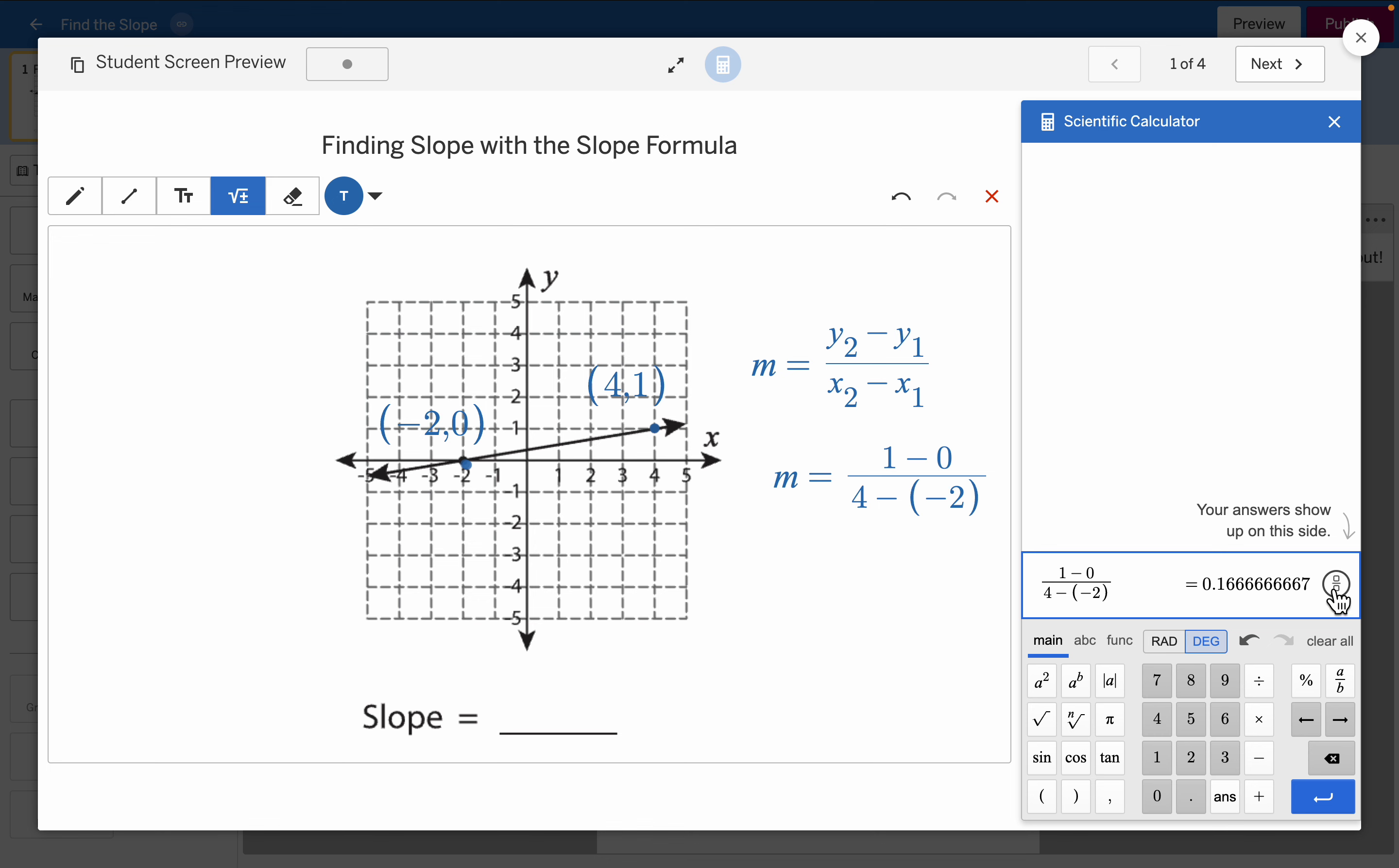And I don't want a decimal if I can get a fraction, so I'm going to click on this to convert to fraction. Now, from this, when we simplify our fraction, we see that our slope is 1/6.